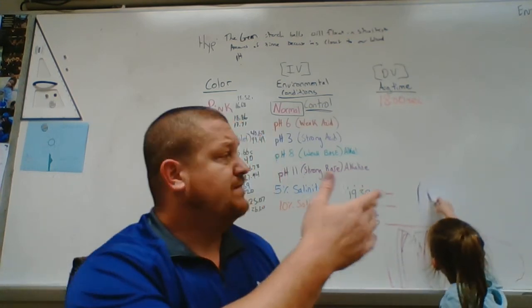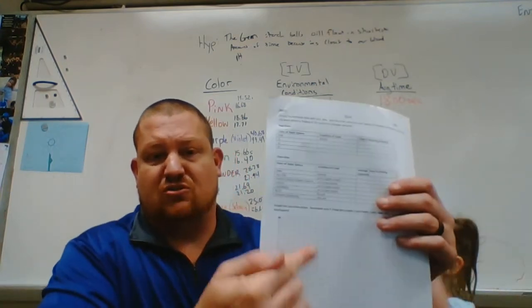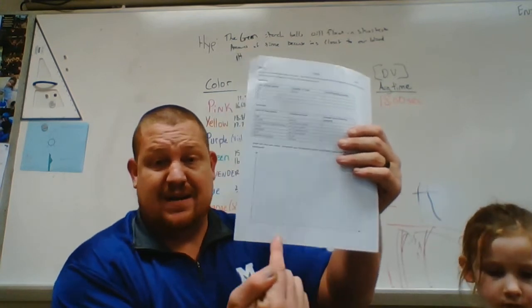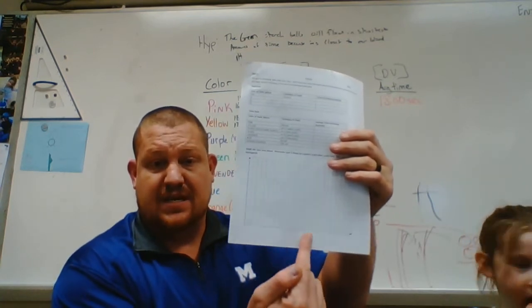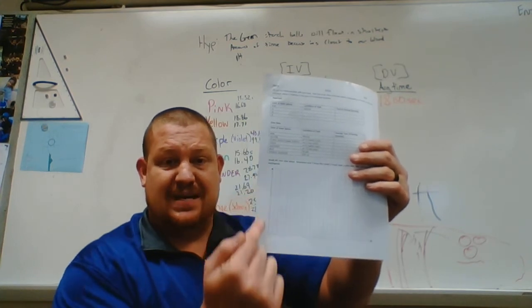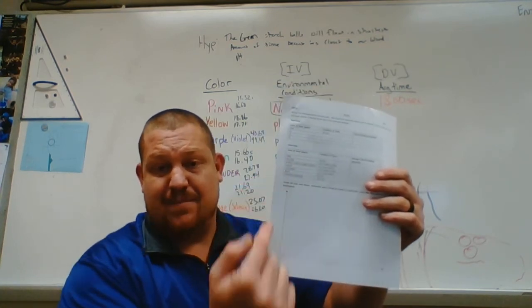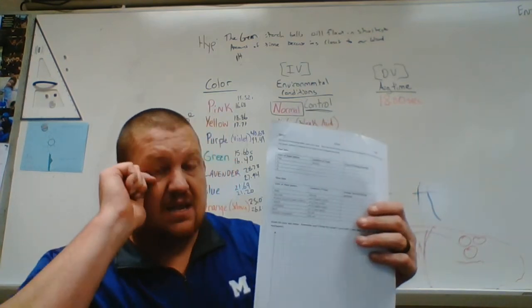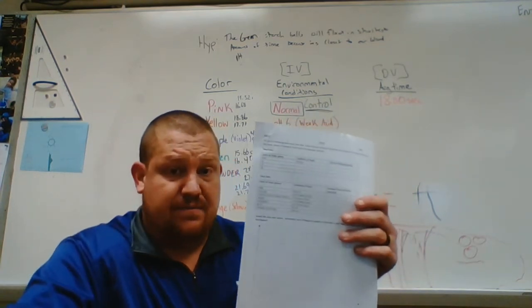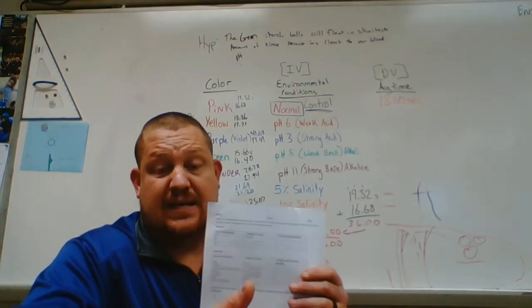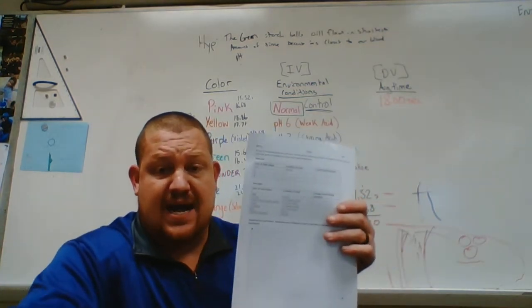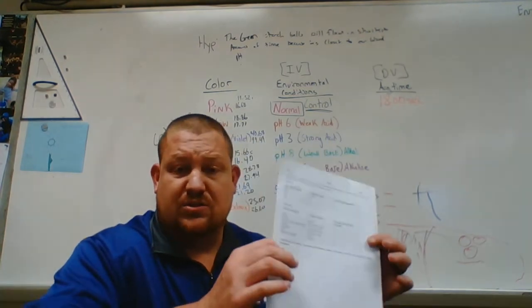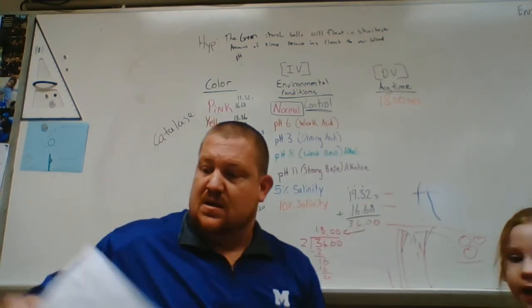Your next step is to graph it. Your independent variable goes here - so your different solutions. Your dependent variable goes here - so the time. Make sure it's to scale, you know, like one, two, three, four, five, or two, four, six, eight, ten. You're going to make a bar graph. Make sure you use a ruler, use colors, make a key, label your x and y axis, give it a title, right? Have a little key over here. I want you to turn this in to me.